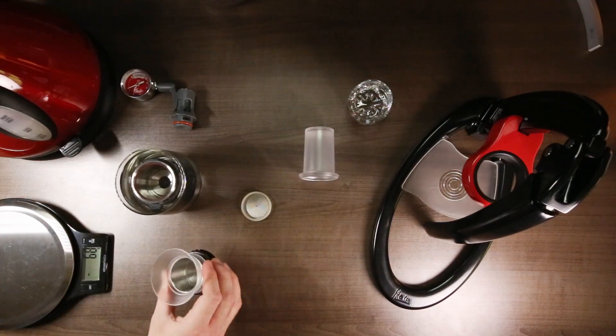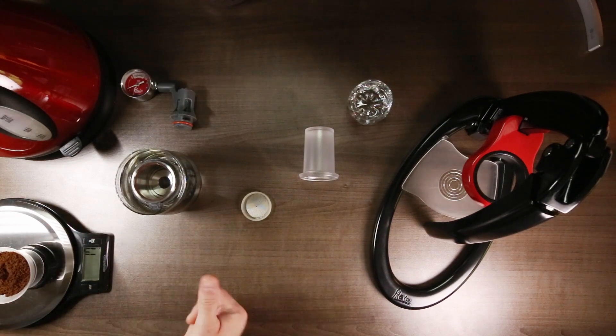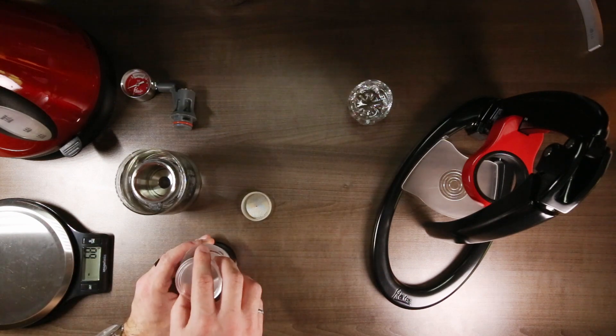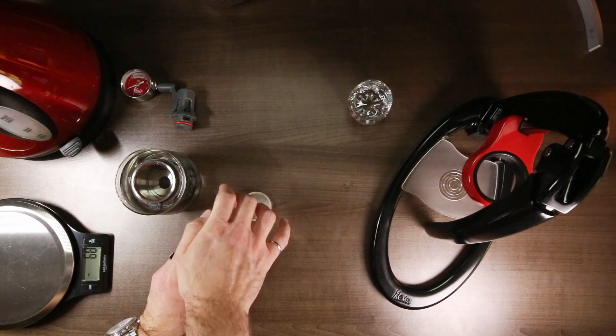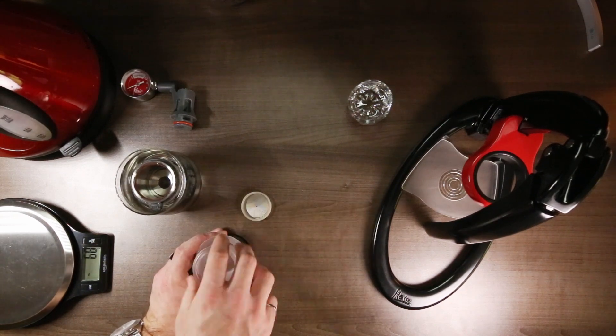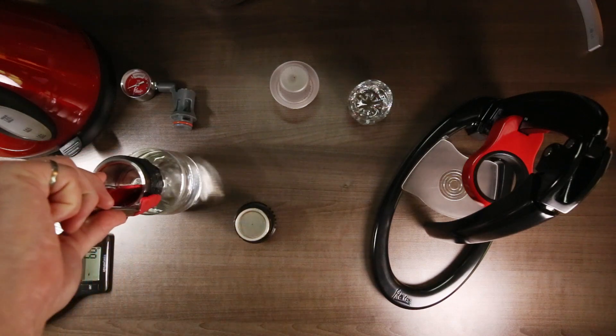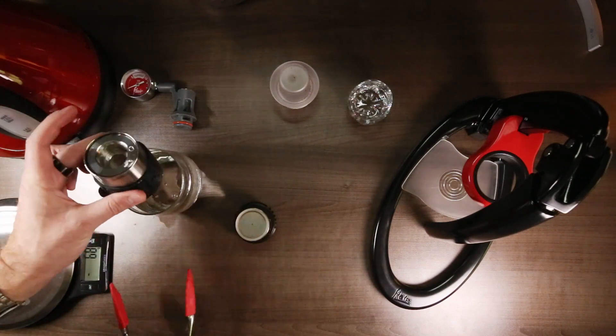While it heats, grind about 17 grams of fresh medium roast beans into the portafilter. Then use the plastic tamper to centralize the grinds and tamp evenly with light pressure. Once you're happy with the tamp, place the dispersion screen atop the portafilter, remove the brew chamber from the hot water using tongs, and be careful not to burn yourself on the hot steel.